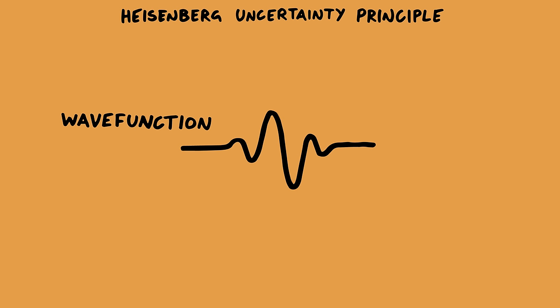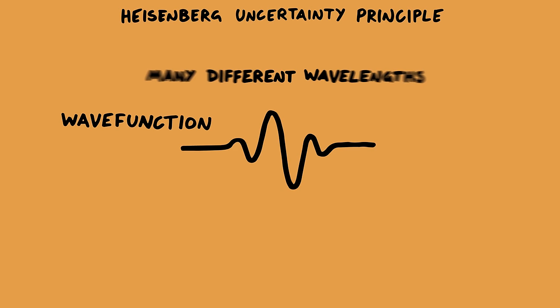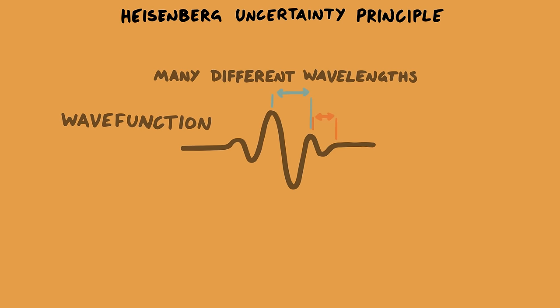Now onto the Heisenberg uncertainty principle. I said at the beginning that this wave function contains all of the information like position and momentum of the electron. We just have to do some maths on it. The position is given by the amplitude or height of the wave, and the momentum is given by the wavelength of the wave. But for this specific wave, the position gives us a probability distribution, so we don't know exactly where the electron is. Also there's an uncertainty in the momentum because this wave is made of many different wavelengths.